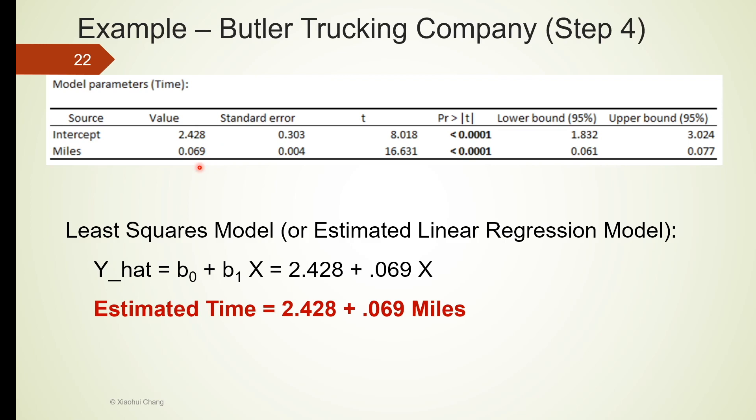So we can write the estimated linear regression model as estimated time equals 2.428 plus 0.069 multiplied by miles. You may notice that I used B0 and B1 in this equation here. This is because B0 is the estimate of beta 0 and B1 is the estimate for beta 1. Their relationship is very much like the sample mean x bar is the estimate of the population mean mu.